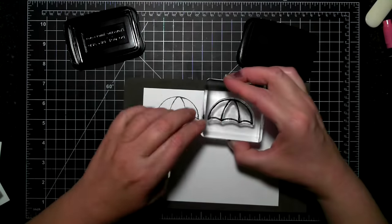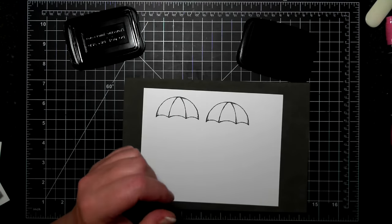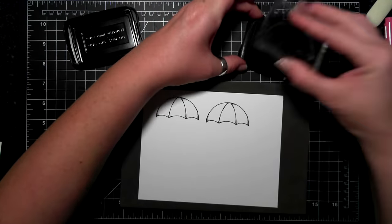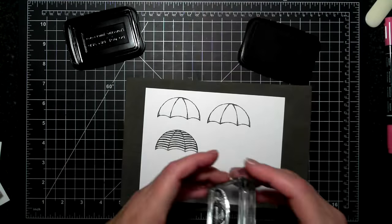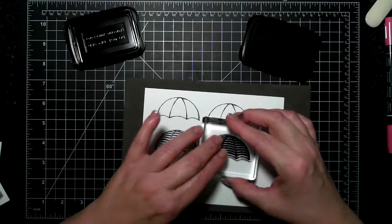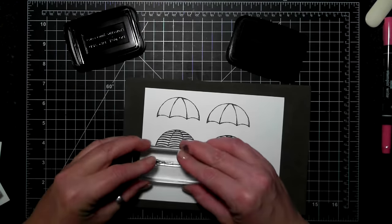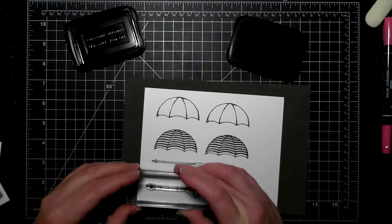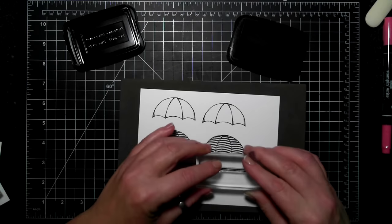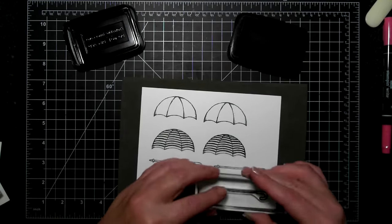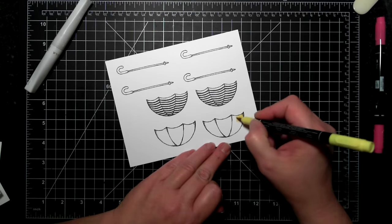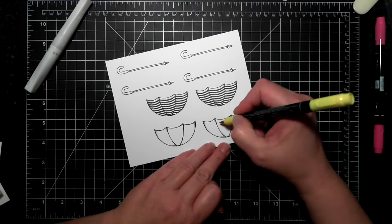I'm using StazOn ink and my piercing mat to stamp these images. I just wanted to mention that you can use StazOn ink with photopolymer, you just can't use StazOn cleaner off of your photopolymer so they will stain, but if that doesn't bother you like it doesn't bother me, I'm going ahead and stamping with it.